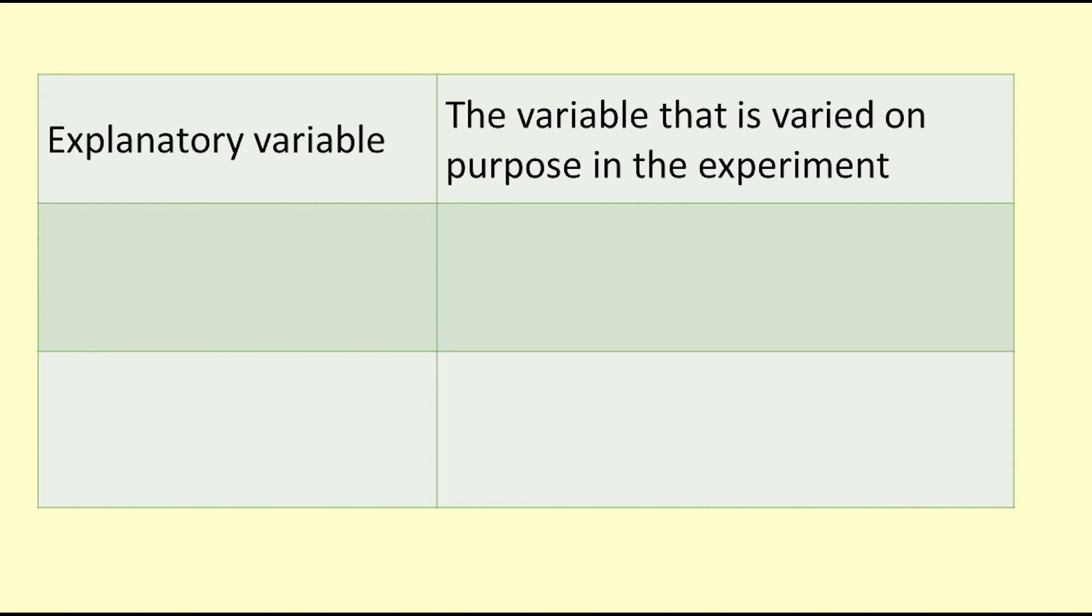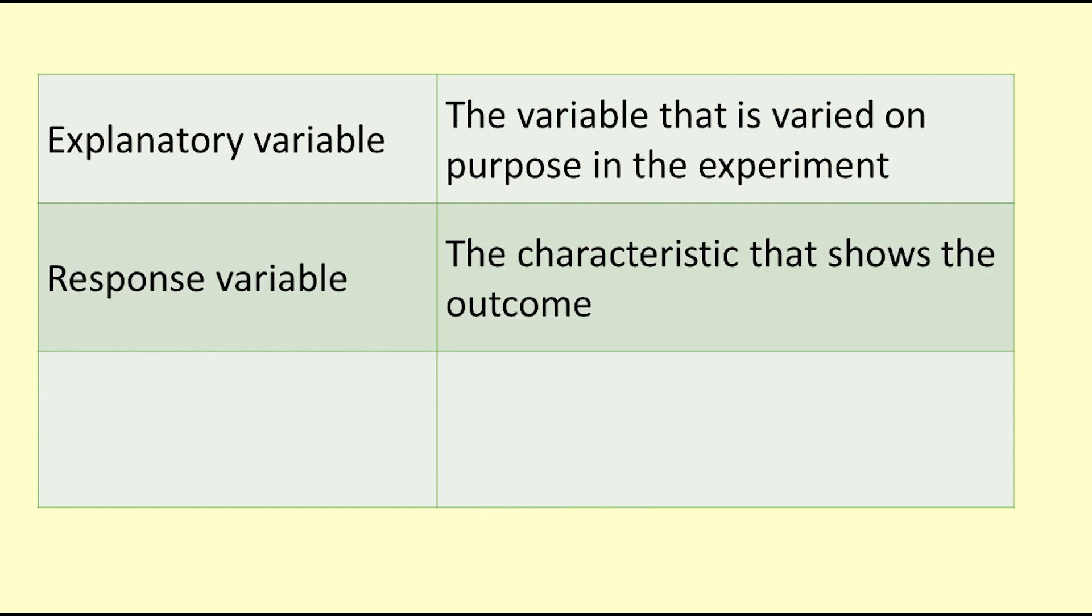Explanatory variable: the explanatory variable is the one that is varied on purpose in the experiment. An explanatory variable can have just two values or it can have many values. Response variable: the response variable is a characteristic that shows what the outcome is for each object in the experiment.